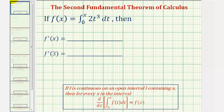A couple things to notice here. The lower limit of integration a must be in an interval where f of t is continuous. The upper limit of integration is x, the same variable with respect to which we're differentiating. And then to evaluate the derivative of this integral, we simply substitute x for t in our function f.